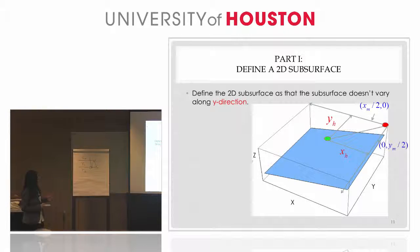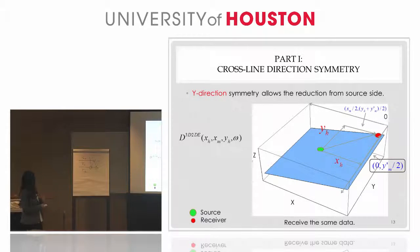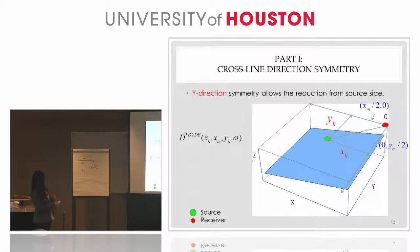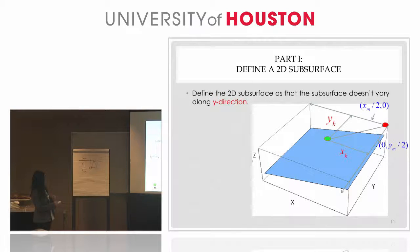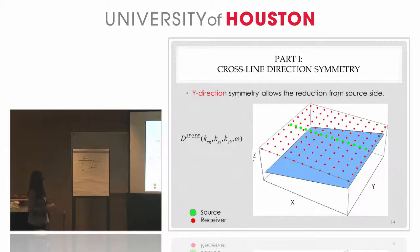If your Earth only varies along x and z directions, which means it does not vary along the y direction, your data will not depend on the midpoint between the source and the receiver along the y direction — the data is independent of ym. If you move a receiver and source pair along the y direction, you only change ym and you will receive the same data. This kind of symmetry allows us to reduce the data requirement of all the sources from an area coverage to a line coverage.